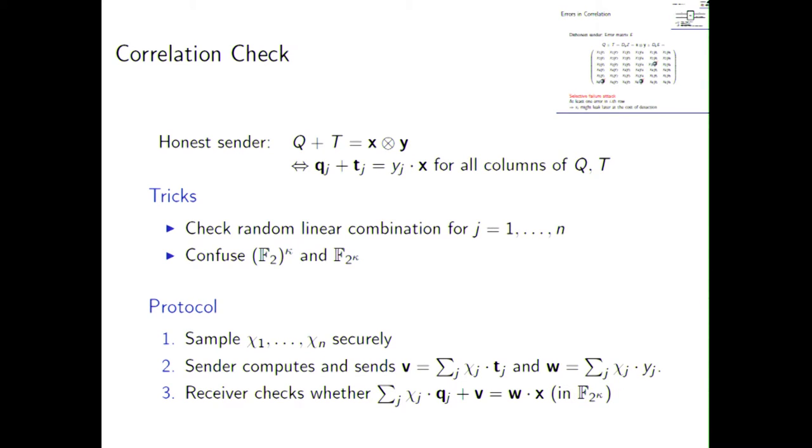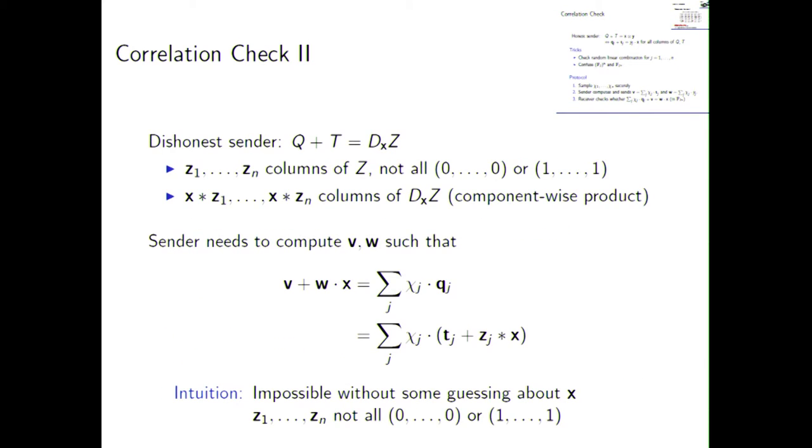So, and now we come to the magic, if you will, of our work. So, remember that in case of an honest sender, Q and T are secret sharing of the tensor product of X and Y. So, put it a bit differently, if you denote the columns of Q and T as Qj and Tj, we essentially get this equation that Qj plus Tj is Yj, the jth bit of Y, times X. For all j, of course. Now, what we do in our protocol, we check a random linear combination of those equations. And we do so by essentially confusing the vector ring and the extension field.